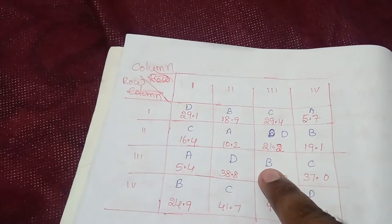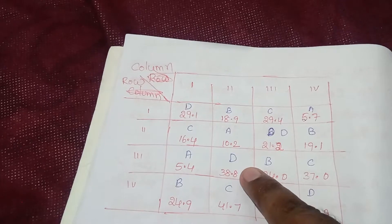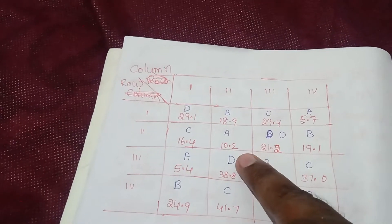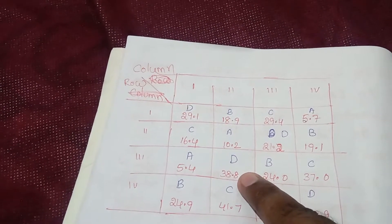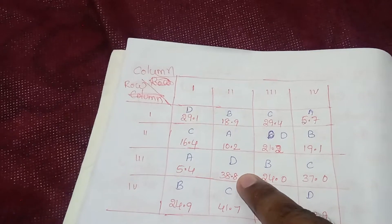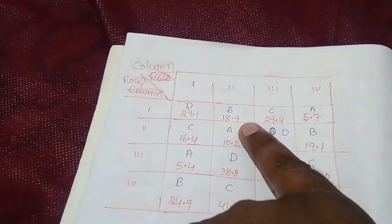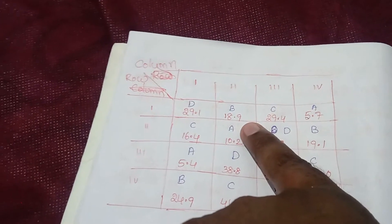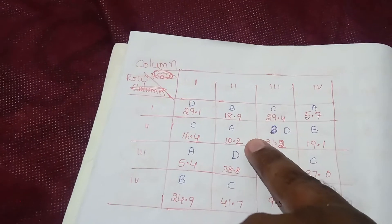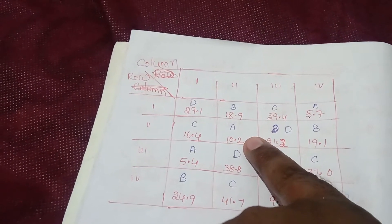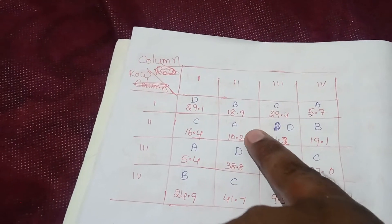Regarding the problem meaning: if we apply treatment D, the given yield value is 38.8. If we take treatment A, in clay A we get the output value equal to 10.2. So this is the meaning of the letter and the number in the layout.